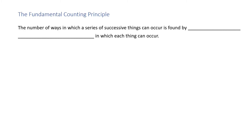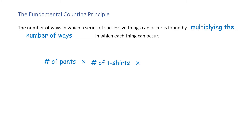The Fundamental Counting Principle: the number of ways in which a series of successive things can occur is found by multiplying the number of ways in which each thing can occur. Let's apply this to the tree diagram we just did. You had two pairs of pants, multiply that by three shirts, then multiply by two pairs of shoes. The product is 12 — the same number we got when we constructed the tree diagram.